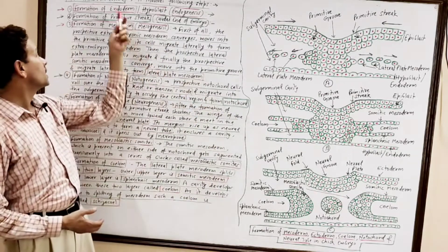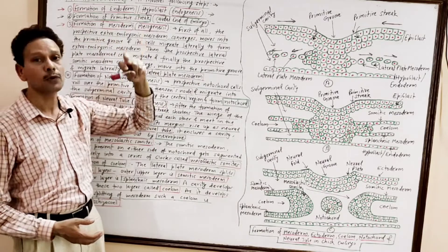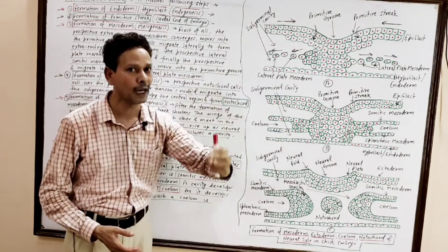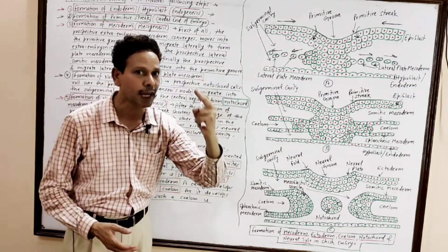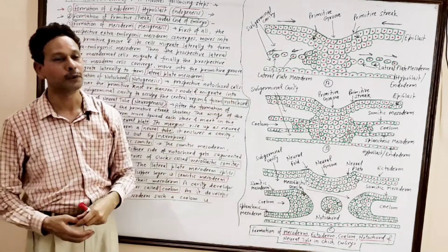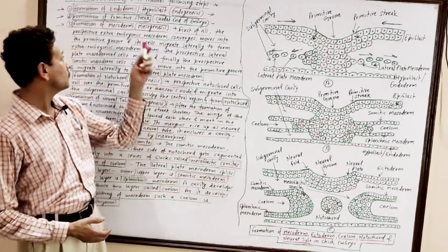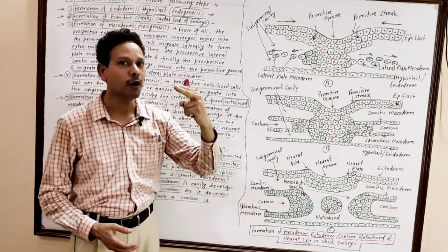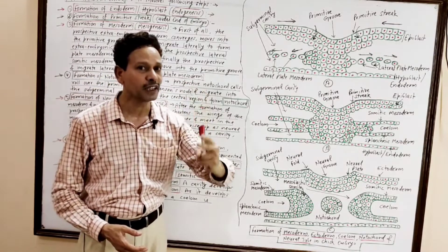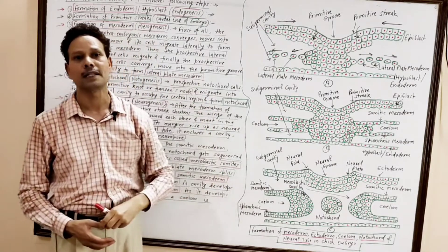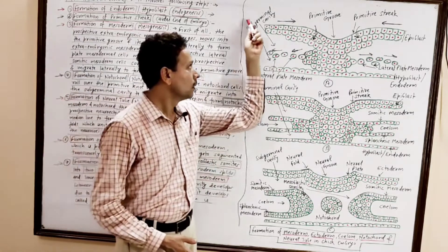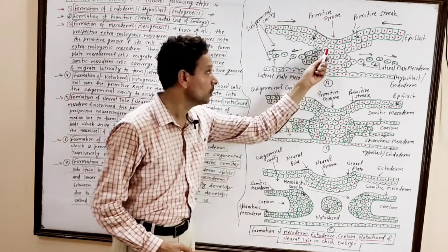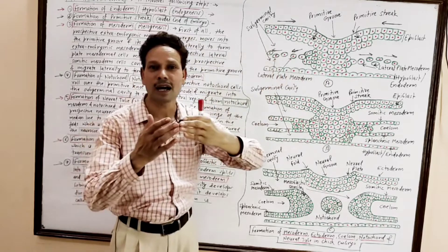The second step is the formation of the primitive streak, which represents the posterior end — the tail region of the embryo. The formation of the primitive streak involves three types of movements: convergence, invagination, and divergence (outward movements).